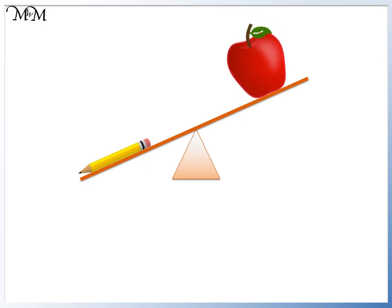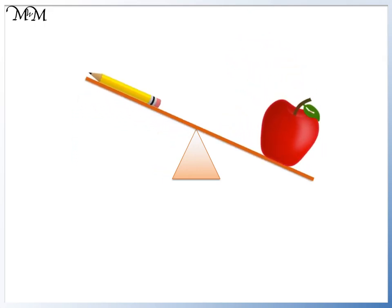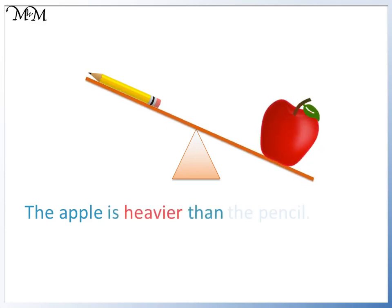Now we put an apple at the other end. The scales now move so that the apple moves down and the pencil moves up. The apple is below the pencil. We say that the apple is heavier than the pencil.